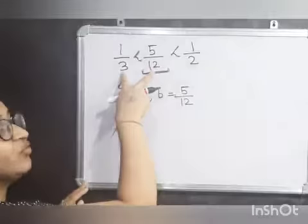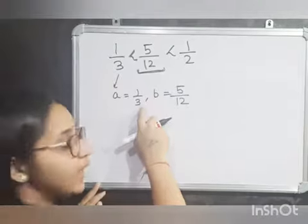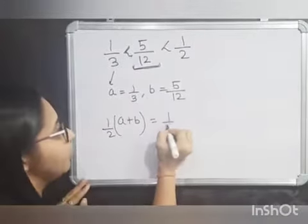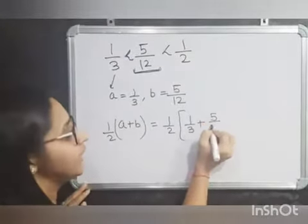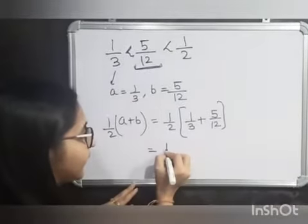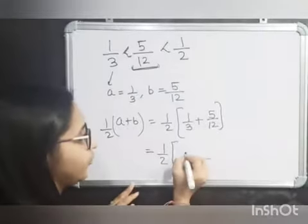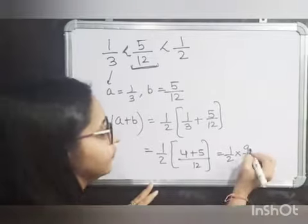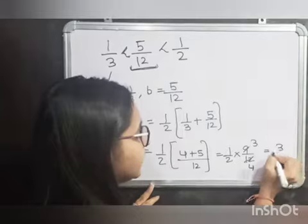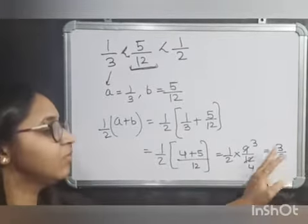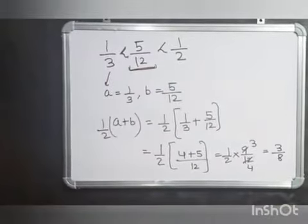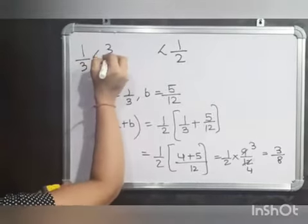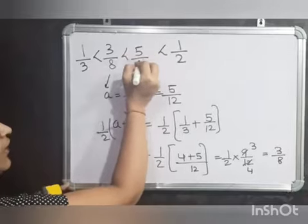Your new A is 1 by 3 and B is 5 by 12. So A plus B by 2 is equal to 1 by 2 times (1 by 3 plus 5 by 12). LCM is 12. That gives 1 by 2 times 9 by 12. Cancel with 3: it is 3 by 8. So there is another rational number 3 by 8 that lies between 1 by 3 and 5 by 12. Your new sequence is 1 by 3, then 3 by 8, then 5 by 12, then 1 by 2.